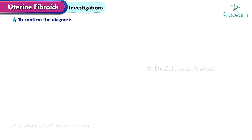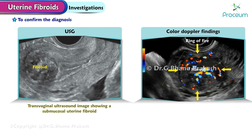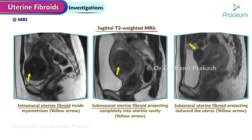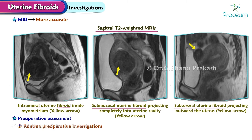Investigation: to confirm the diagnosis, ultrasound and color Doppler findings are homogenous hypoechoic mass and peripheral vascularity. MRI is more accurate compared to ultrasound. Preoperative assessment: apart from routine preoperative investigations, intravenous pyelography to note the anatomic changes of the ureter may be helpful.